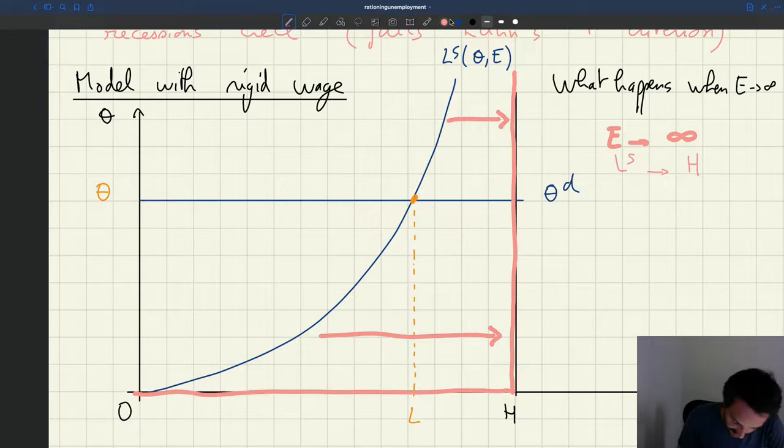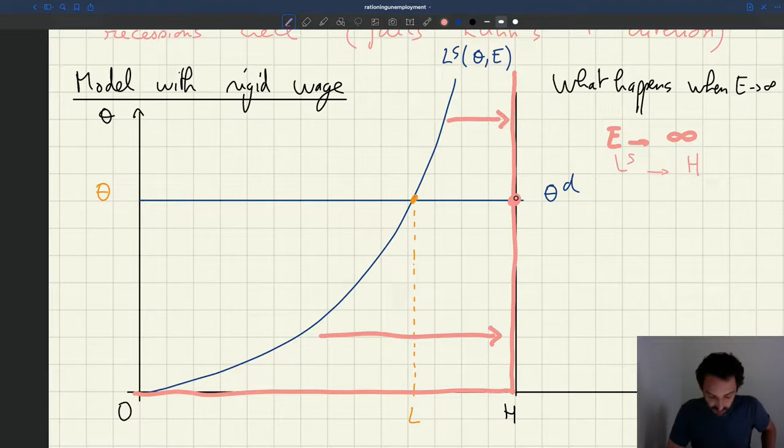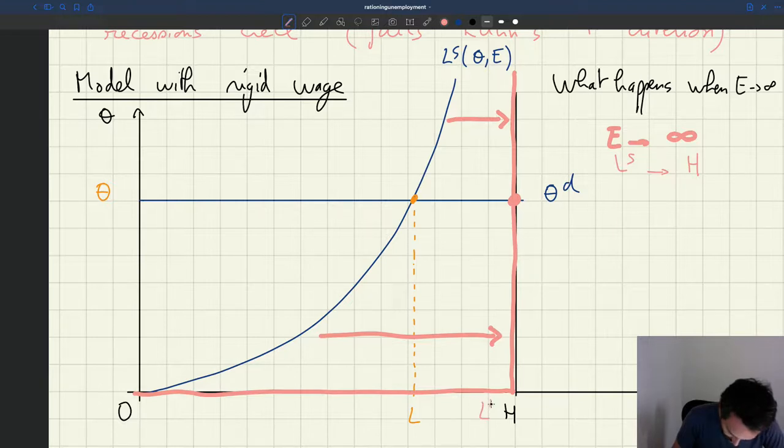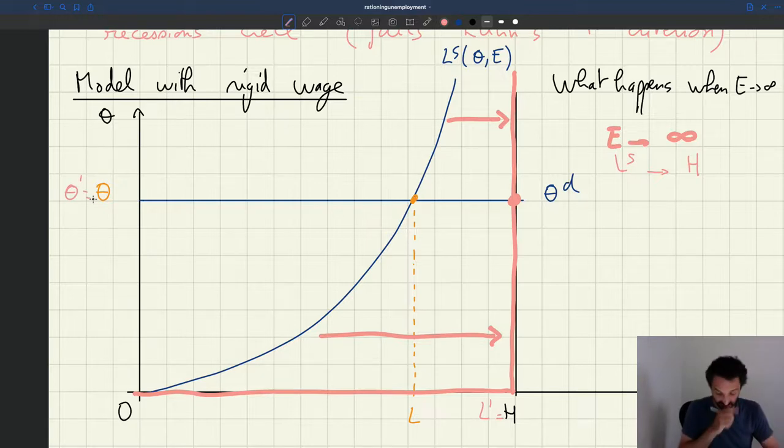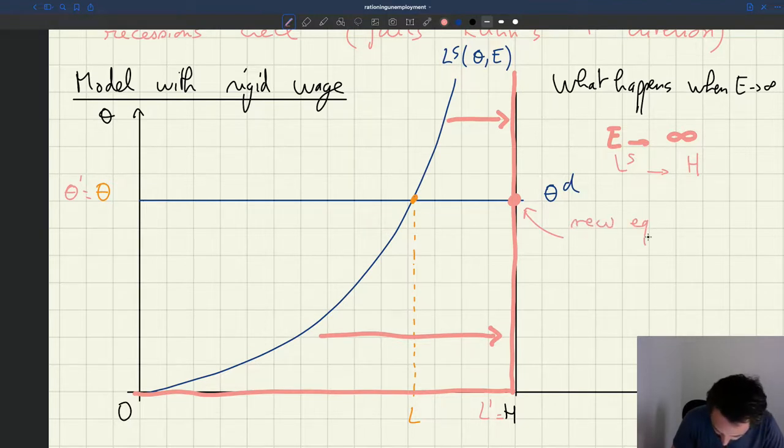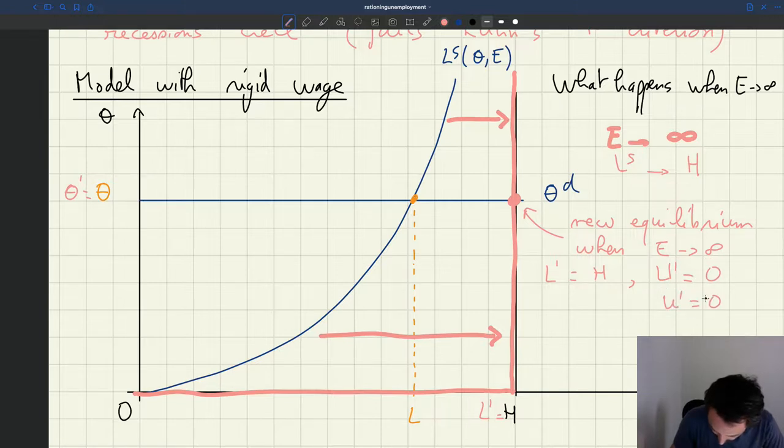So what's going to be the new equilibrium? Well, the new equilibrium is going to be here, at the intersection of the same old labor demand but the new labor supply. So L prime is going to be equal to H. Theta prime doesn't change, still equal to theta. And as we can see, this is the new equilibrium when effort has gone to infinity. So employment is equal to H, which means that unemployment is equal to zero and the unemployment rate is also equal to zero.